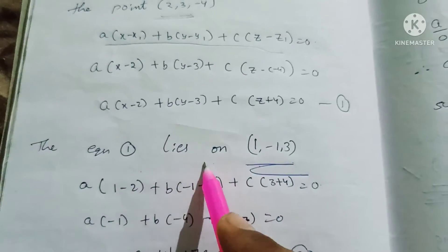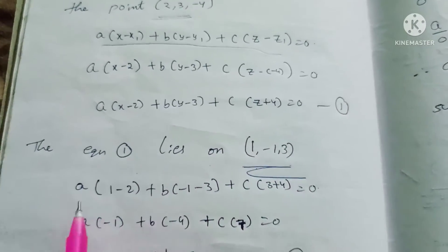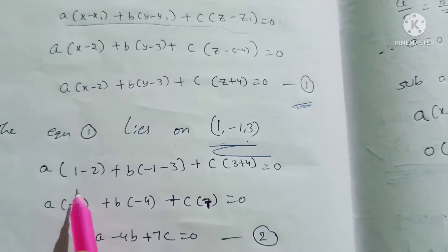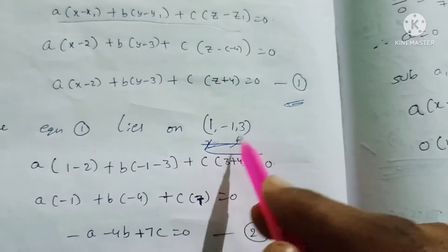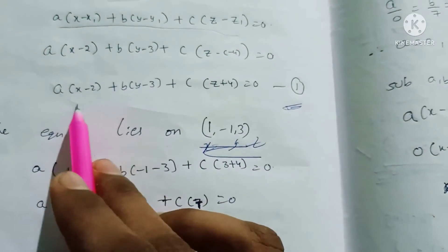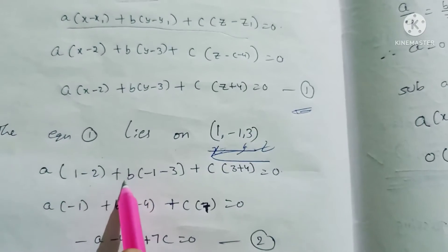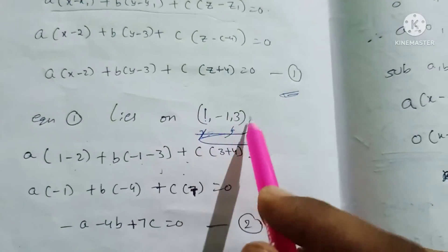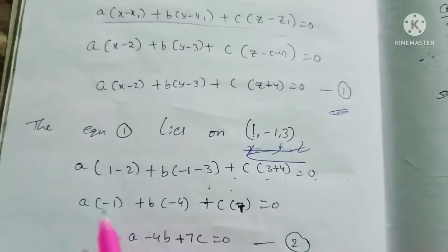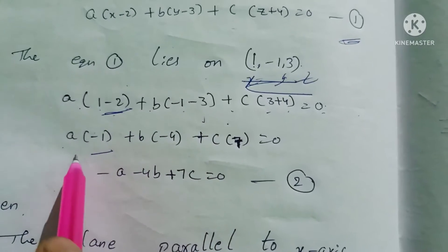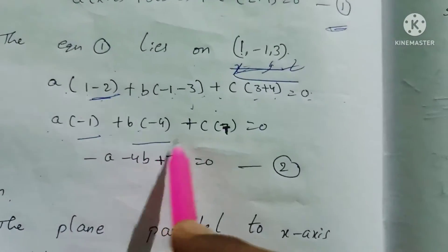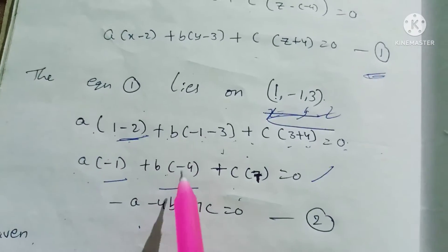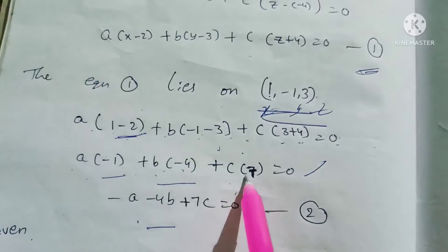The first point (1, -1, 3) lies on the plane — this is the first equation. The second point also lies on the plane. So we have the formula: a(x − 2) + b(y − 3) + c(z + 4) = 0. Substituting (1, -1, 3): a(1−2) + b(−1−3) + c(3+4) = 0, giving −a − 4b + 7c = 0.